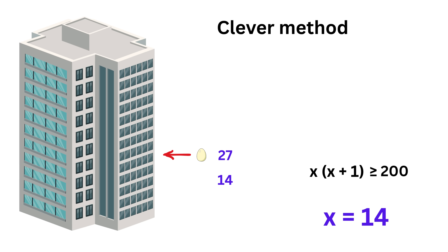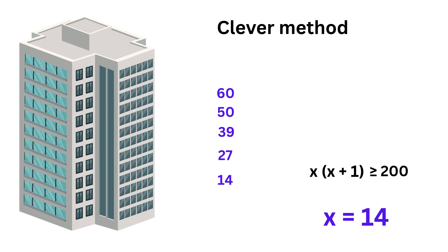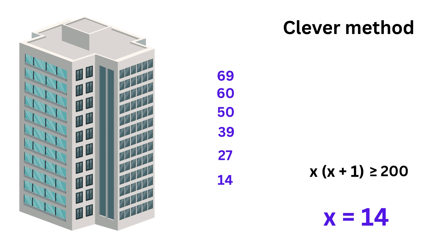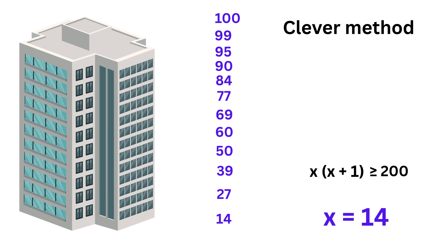Then go to floor 27, which is 14 plus 13. Then 39, which is 27 plus 12. Then next is 50, then 60, 69, 77, 84, 90, 95, 99, and finally 100.